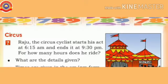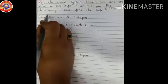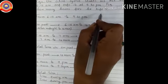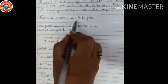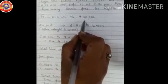Today's first activity: Circus. Raju the circus cyclist starts his act at 6.15am and ends it at 9.30pm. For how many hours does he ride?